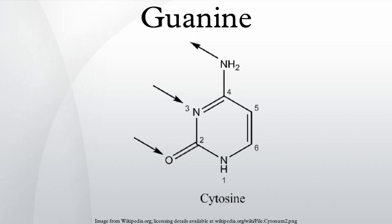In cytosine, the amino group acts as the hydrogen bond donor and the C2-carbonyl and the N3-amino as the hydrogen bond acceptors. Guanine has the C6-carbonyl group that acts as the hydrogen bond acceptor, while a group at N1 and the amino group at C2 act as the hydrogen bond donors. The first isolation of guanine was reported in 1844 from the excreta of seabirds, known as guano, which was used as a source of fertilizer.